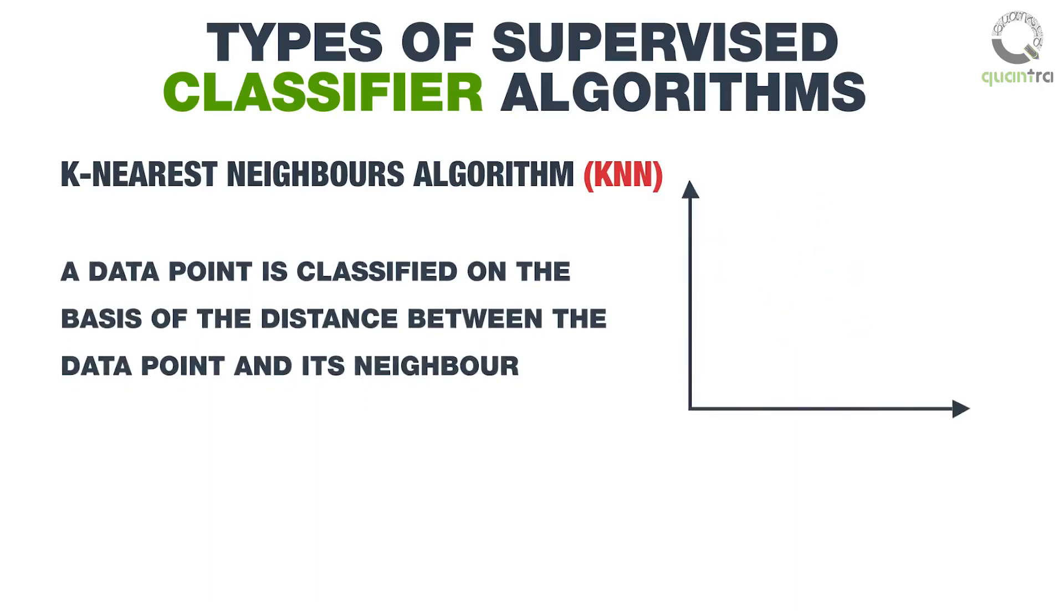Consider this graph where 0 and X are the defined classes for classification, and we have to classify a new unknown data point plus. Assume the value of K, or the number of nearest neighbors to be considered, to be 3. Then, a circle around the plus will be drawn to find these nearest neighbors.